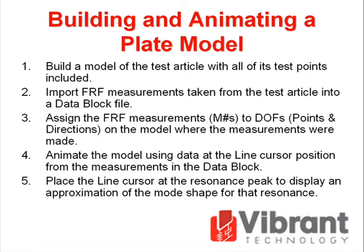First, build a model of the test article with all of its test points included. Second, import FRF measurements taken from the test article into a data block file. Third, assign the FRF measurements to DOFs on the model where the measurements were made. Fourth, animate the model using data at the line cursor position from the measurements in the data block. Fifth, place the line cursor at a resonance peak to display an approximation of the mode shape for that resonance.